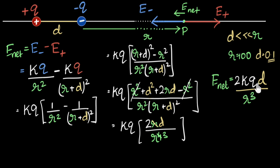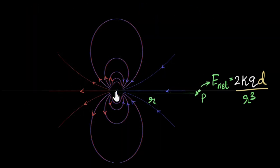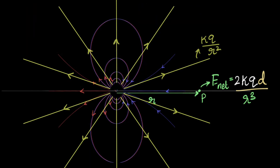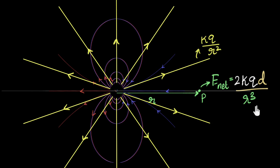Here is our mathematical expression for the field on the axis of the dipole. Notice it depends on 1/R cubed, which means the dipole field falls off much faster than the radial field, which goes as 1/R squared. Looking at the field line visualization, you can see that dipole field lines spread apart much more quickly as you move farther away — so it makes sense that it dies out faster than 1/R squared. One over R cubed makes sense.